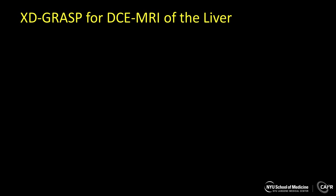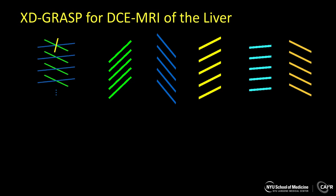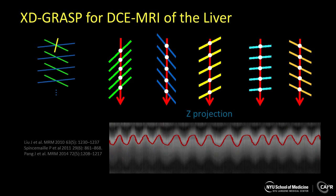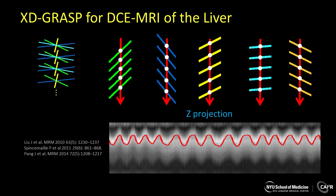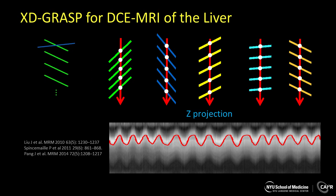We have demonstrated the performance of XTGRASP for two applications. The first application is DCE MRI of the liver. Here, we use the stack-of-stars radial sampling for data acquisition. We can perform a Fourier transform along all the central k-space points at each acquisition angle, so that we can generate the so-called Z-projection profile. A respiratory motion signal can be extracted from this Z-projection profile.